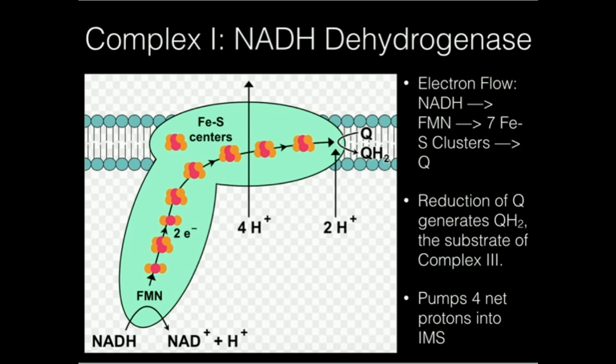The first one, complex 1, is called NADH dehydrogenase. There are many enzymes and pathways in biochemistry all over the cell that produce NADH. We could talk about glycolysis, that produces 2 net NADH per glucose. We can also talk about the Krebs cycle, which produces 3 NADH per cycle.